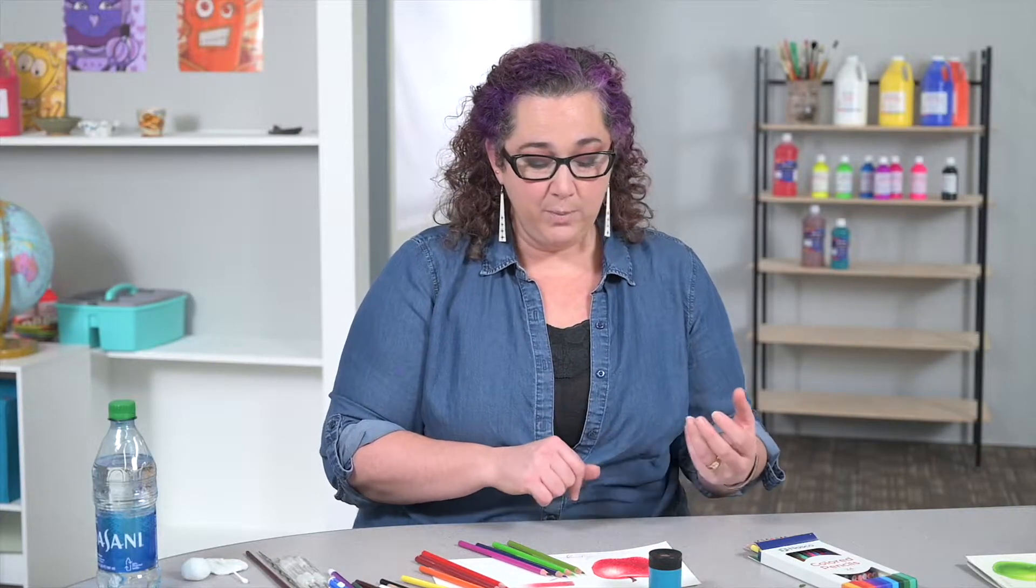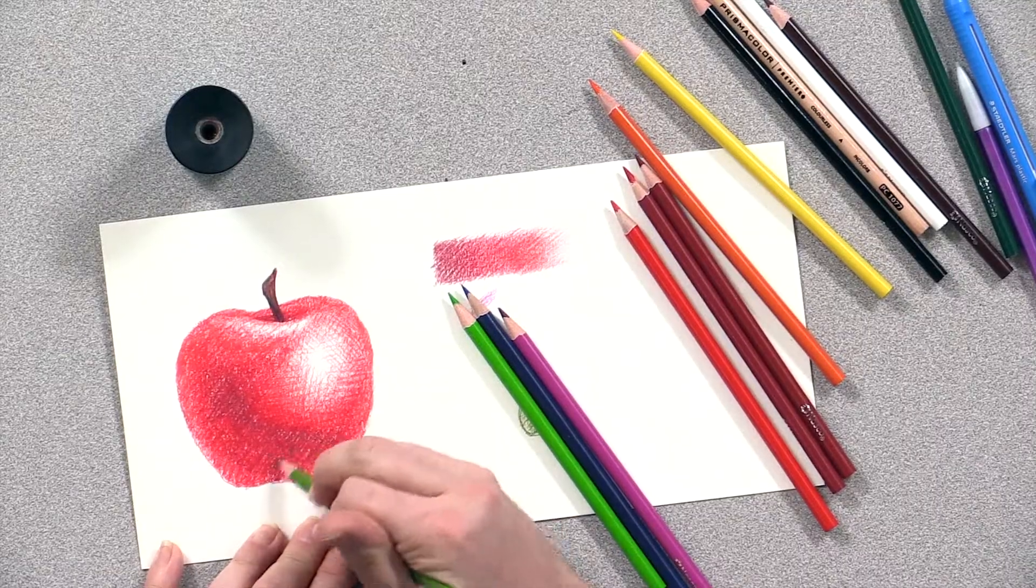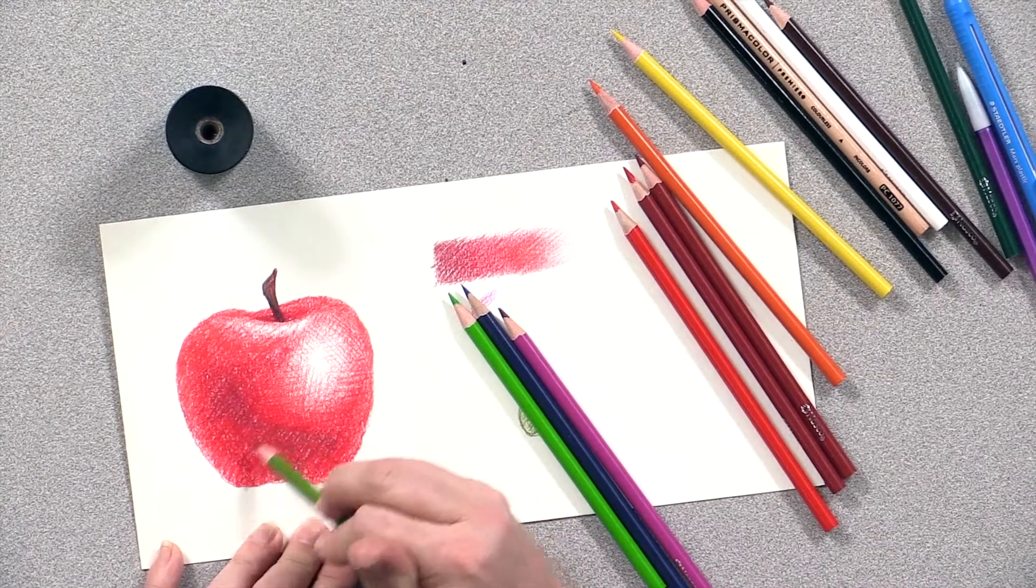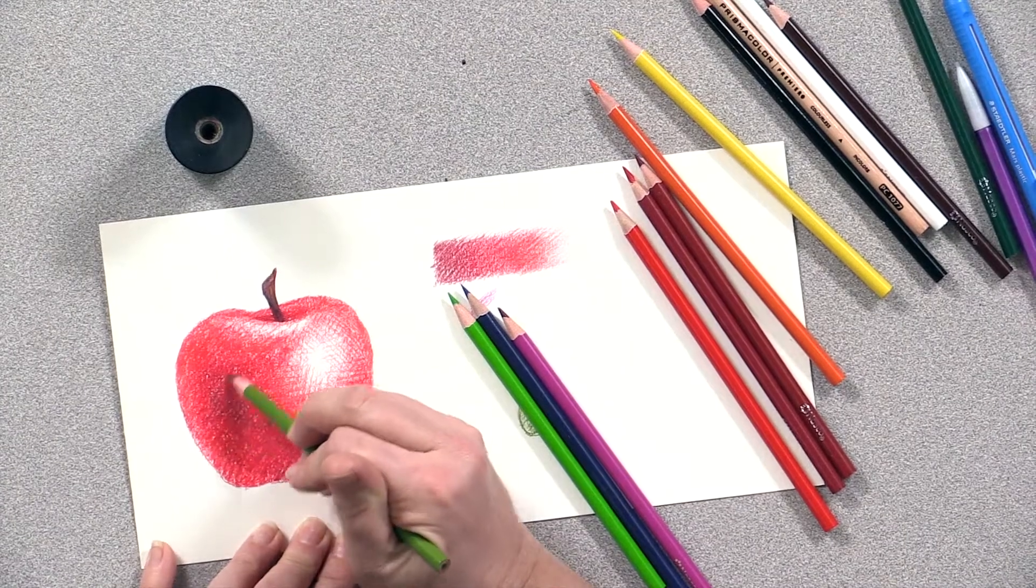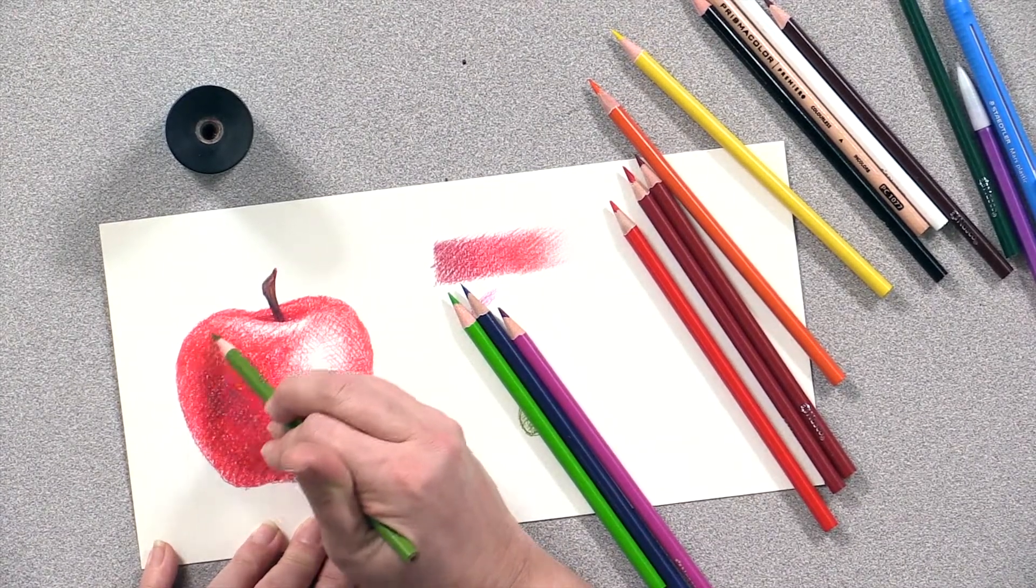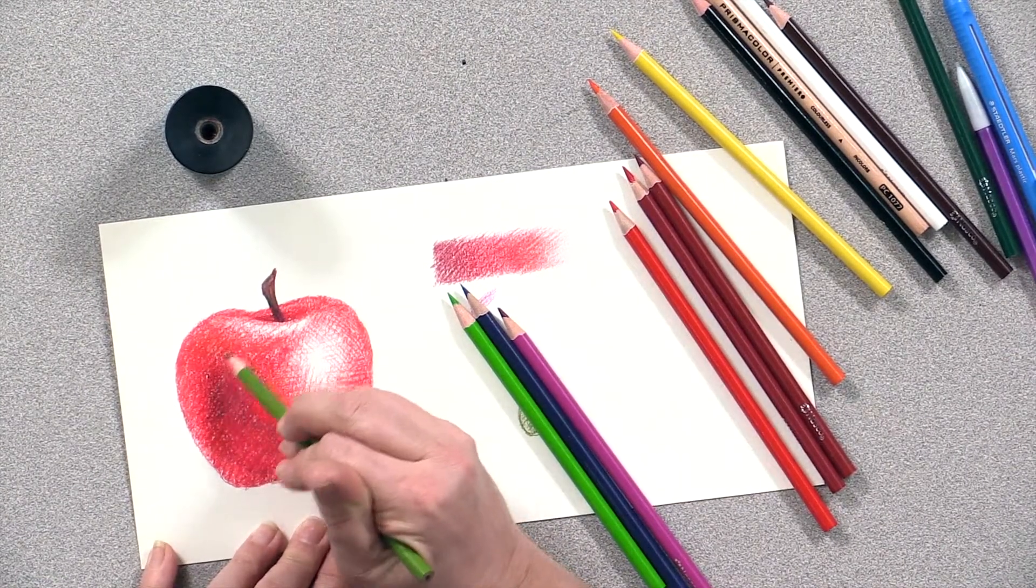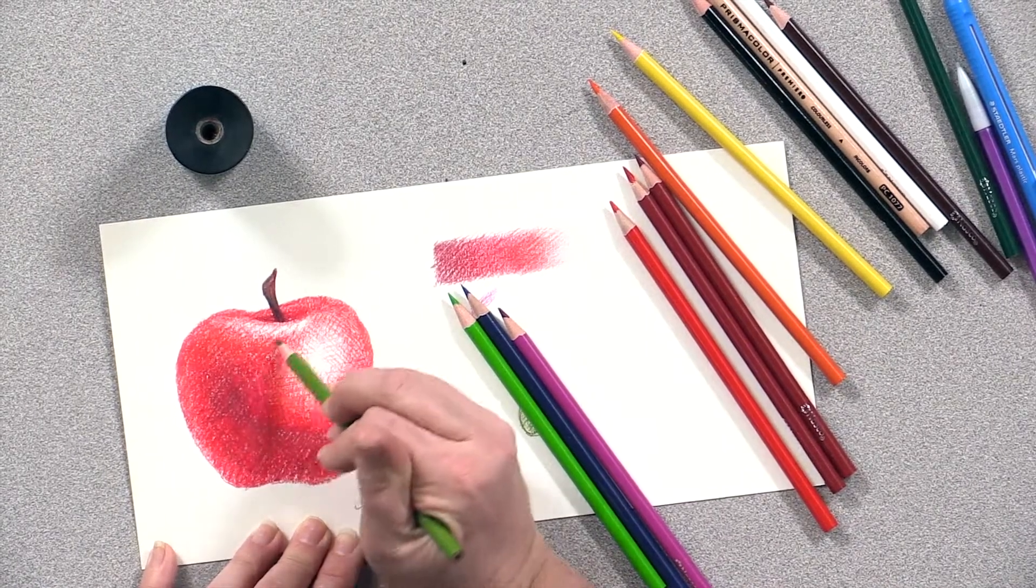This is something that always scares my students, but I don't want it to scare you. It feels uncomfortable to take this red apple and come in at it with blues and greens and purples. But the end result, I'm telling you, is going to be much, much more interesting. When I start to layer my colors, you're not going to see much variation there happening on the screen. But what you'll notice over time is this red is going to tone down a little bit and become a bit more natural.